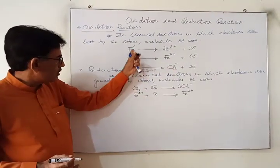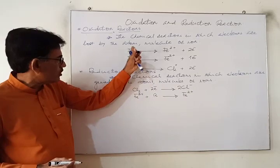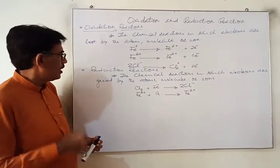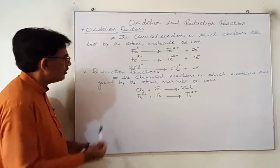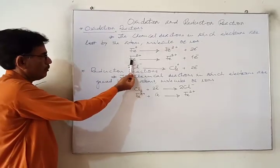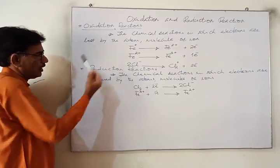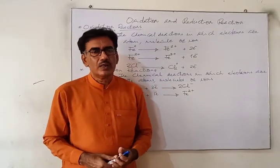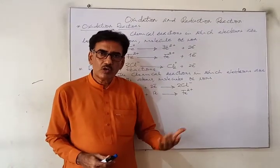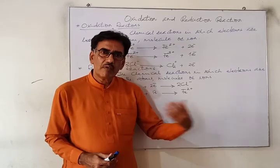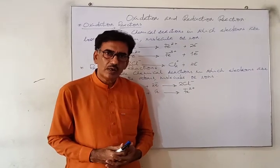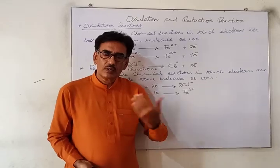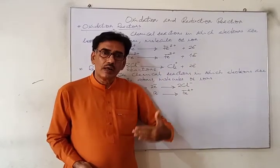So these three are the examples in which we find oxidation, where electrons are lost by the atom, then by the positive ion, then by the negative ion. When this type of oxidation takes place, on the other side we definitely have a simultaneous change, which is the gain of electrons.